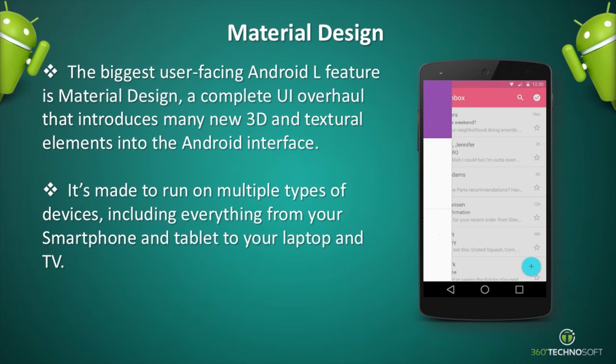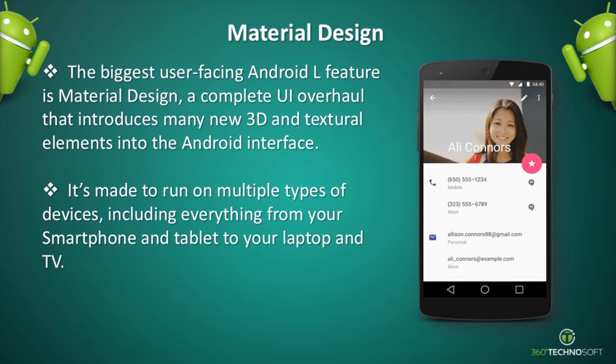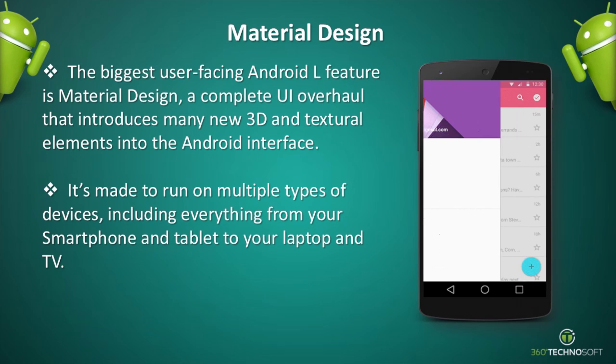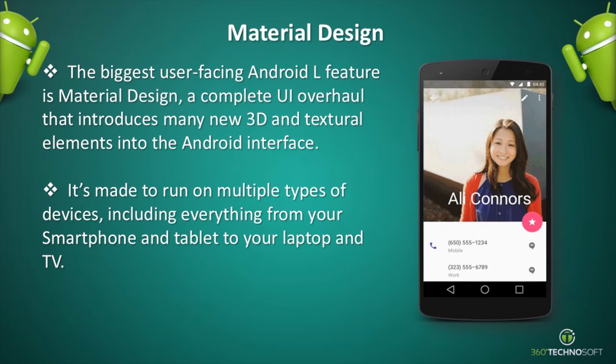The biggest user-facing Android L feature is Material Design, a complete UI overhaul that introduces many new 3D and textural elements into the Android interface. It's made to run on multiple types of devices, including everything from your smartphone and tablet to your laptop and TV.